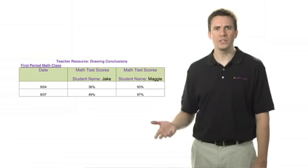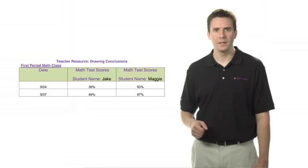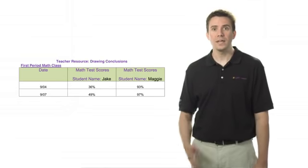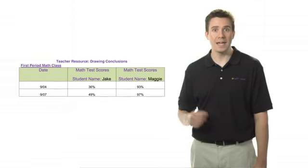What can you conclude about these students based on the above data? Can you draw any conclusions about boys versus girls? Why or why not? Can you draw a fair conclusion about Jake and Maggie?